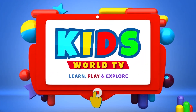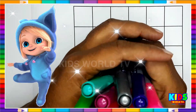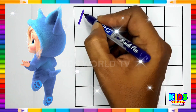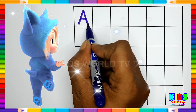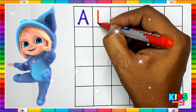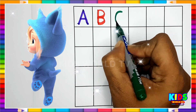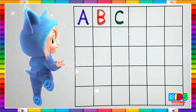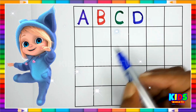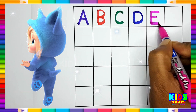Kids World TV. A for Apple, B for Ball, C for Cat, D for Dog.